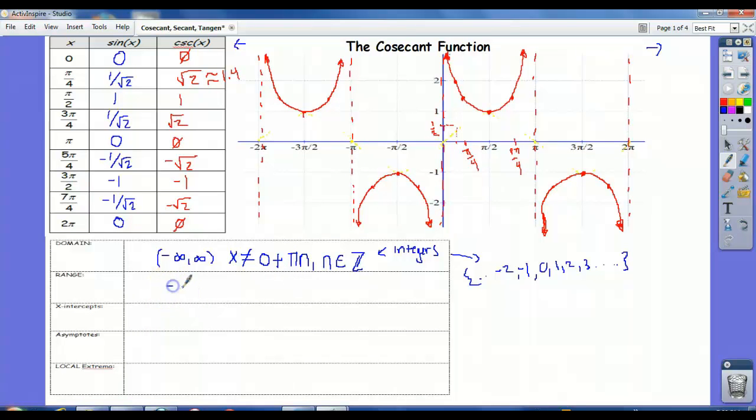The range, we'd say negative infinity to negative 1, hard bracket, and then 1 to infinity.